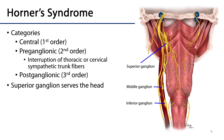As this is an anatomy of the head and neck course, it's important to note that it is the superior cervical sympathetic ganglion which serves the head, and so it's from this particular ganglion that any symptoms of Horner's would present in the scope of the anatomy we're discussing.